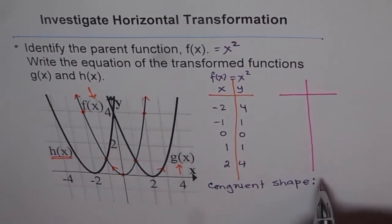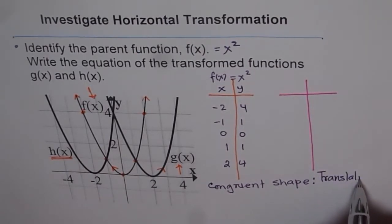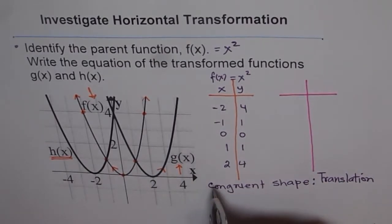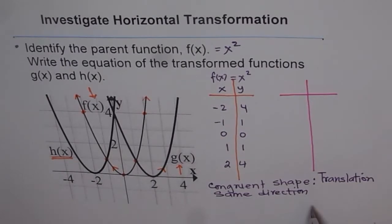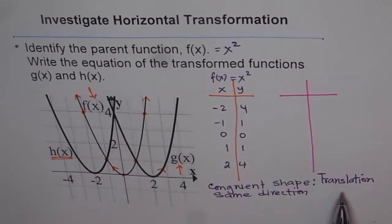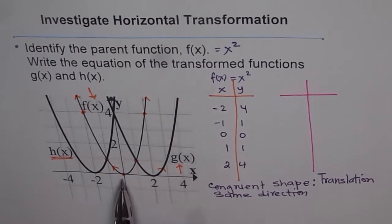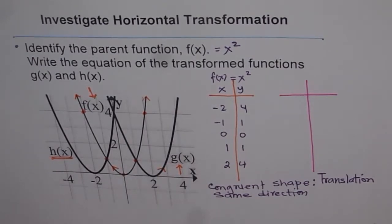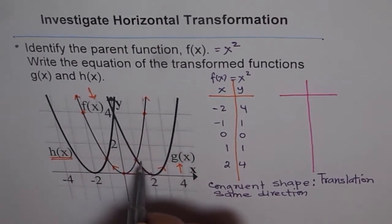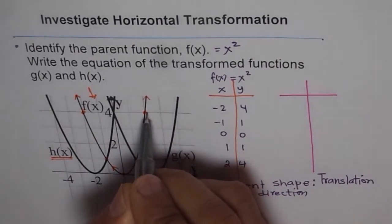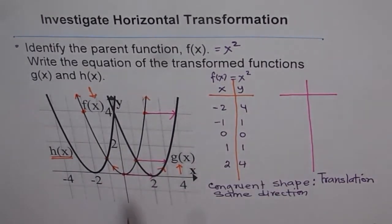A congruent shape means the only transformation is translation. We also note congruent shape and same direction — if the direction had flipped, there would be a reflection. But in this example it is congruent shape and same direction, so it is just translation. Now, what type of translation? From the original function, each and every point gets translated two units to the right. The y-values remain the same but the x-values move two units to the right.